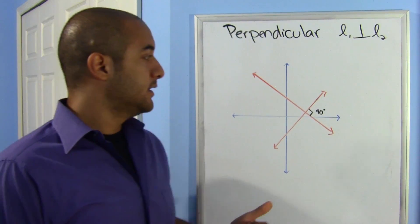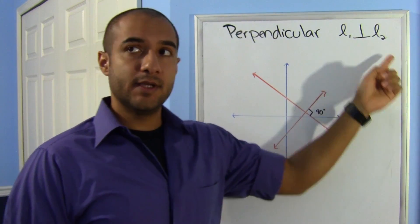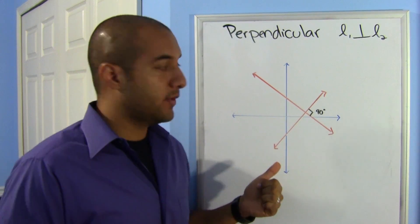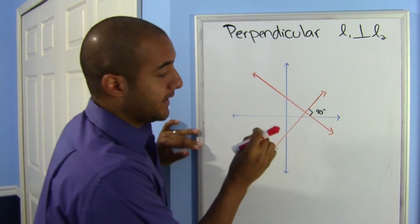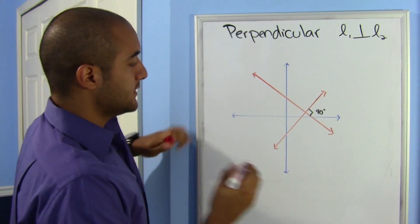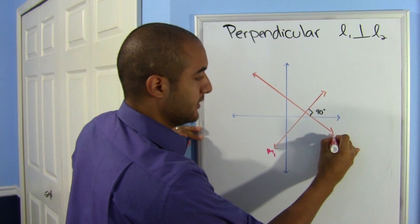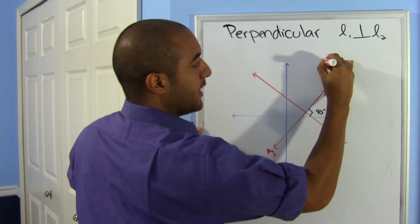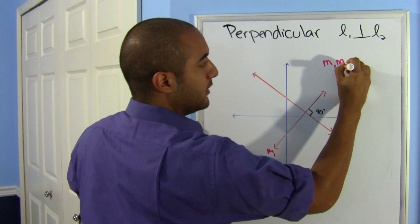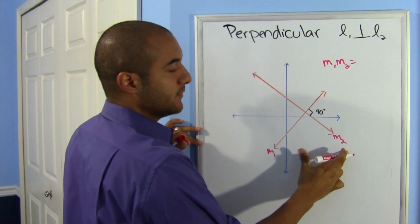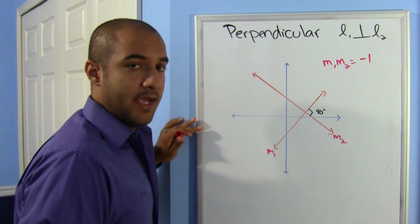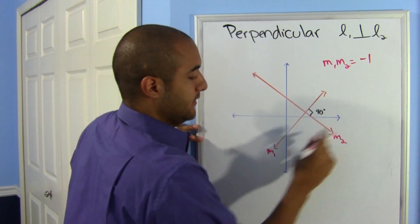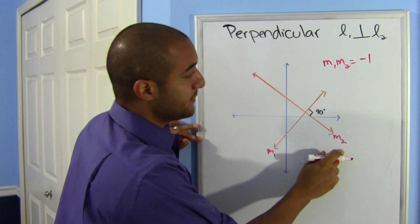Alright, now for perpendicular lines. For line 1 to be perpendicular to line 2, they'll intersect once. And where they intersect, they must create a 90 degree angle. This can only happen if their slopes, okay, the formal definition is that the product of their slopes, so when you multiply the two slopes, it's equal to negative 1.